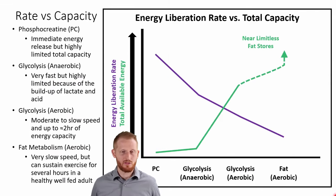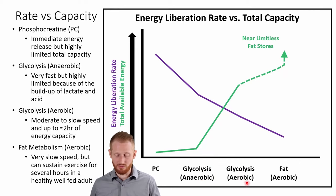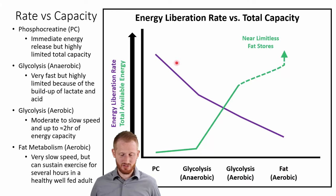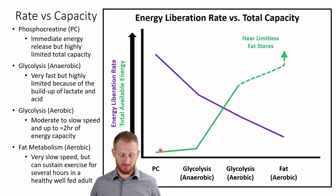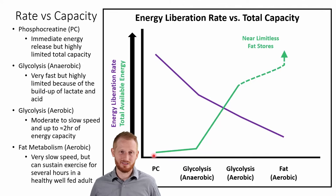This figure shows phosphocreatine, glycolysis ending in lactate (anaerobic), glycolysis ending in pyruvate going into aerobic pathways, and aerobic fat metabolism. Two lines: purple represents energy liberation rate (how quickly we get energy out) and green represents total energy available. Phosphocreatine is an immediate energy source — we can produce a lot of energy really quickly, but there's very little stored, so we run out quickly.